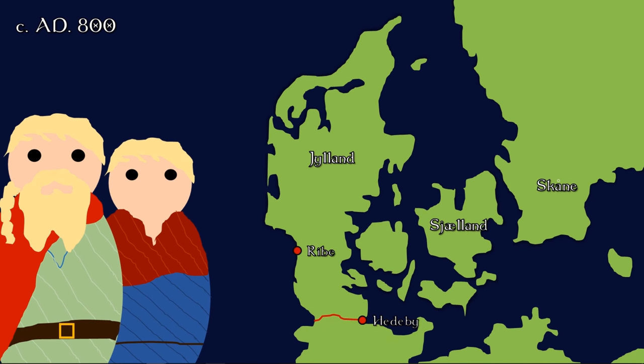Around this time, two trading hubs — one at Ribe and the other at Heideby — become very important and start to flourish. One reason they flourished is that there was more centralization and stabilization in Denmark. We could even posit that southern Jylland had one ruler, because he would then be able to control the seas around Ribe and Heideby, protect the traders from pirates and brigands, meaning more trade could flow freely. That would be a positive feedback loop: more trade means more money going into the ruler's pocket, so he can strengthen and stabilize the region further, making more traders feel safe to come and trade there.